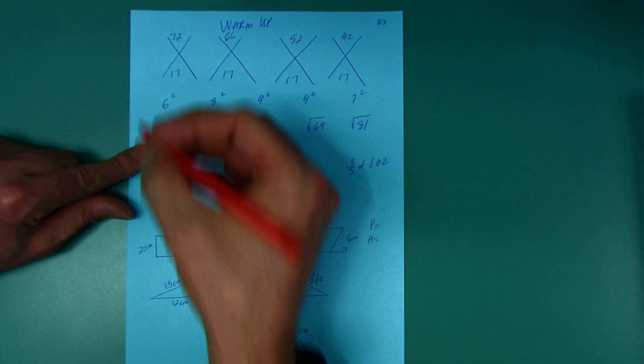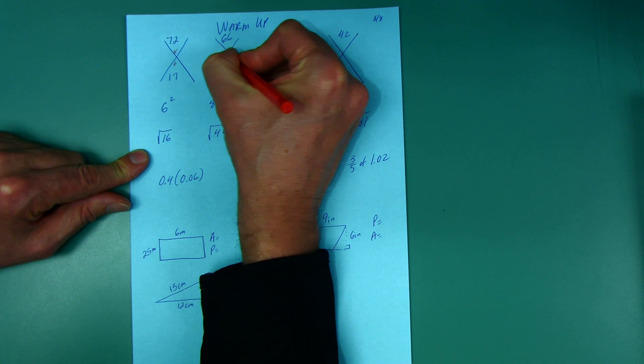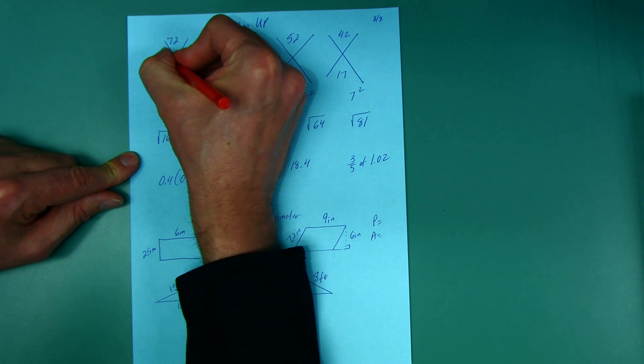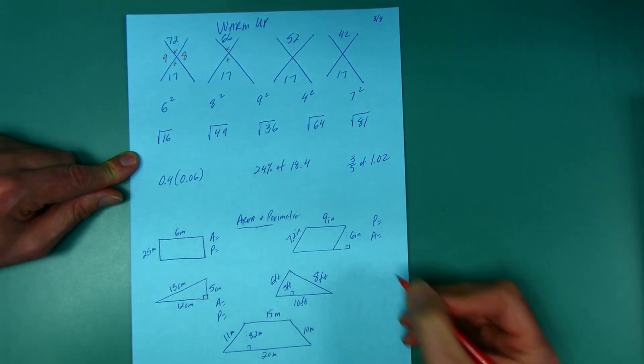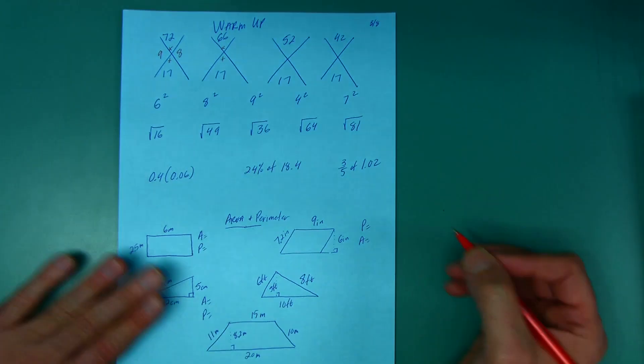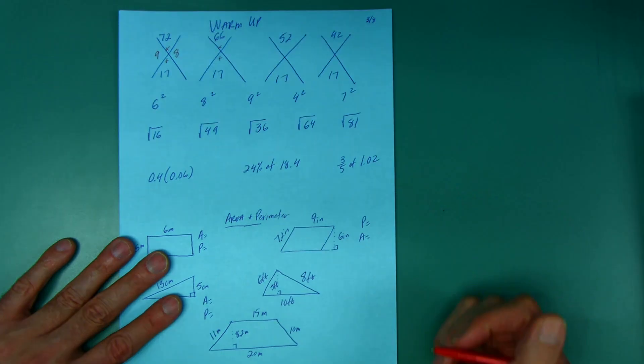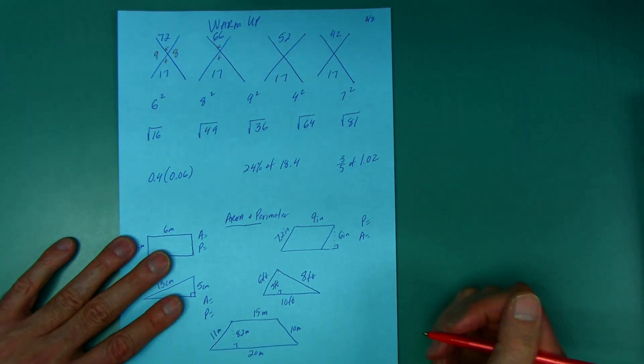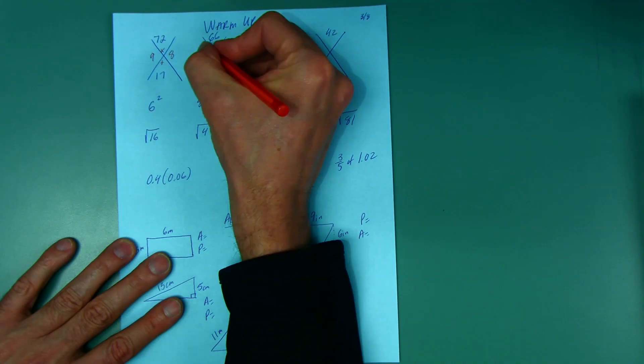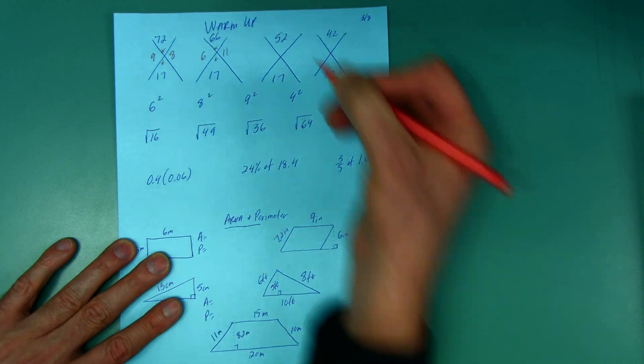Here we go. First off, the diamonds - remember the top is the product, the bottom is the sum. What two numbers multiply together equal 72 but when you add you get 17? Hopefully you figured out that 9 times 8 is 72, 9 plus 8 is 17. I have 17 again, 17 is the same all the way around the bottom. But now I have 66. Whenever I have repeating digits I know 11 goes into it, at least for under 100. 6 times 11 is 66 and 6 plus 11 is 17.